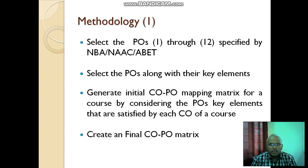The methodology is like that. First, you select program outcomes 1 to 12 specified by National Board of Accreditation or NBA/NAC or ABET, or you can define some more program outcomes also. Once you select the program outcomes along with their key elements which I presented in lecture 5, select that program outcomes along with their key elements.